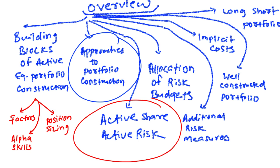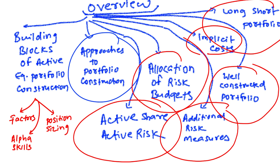We have some discussion on approaches to portfolio construction, then calculations around the concept of active share and active risk. Some calculations on allocation of risk budget, which is kind of the interesting part. Then additional risk measures, implicit costs, well-constructed portfolios, and towards the end, long-short portfolios.